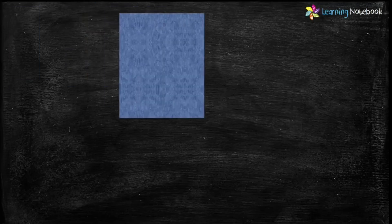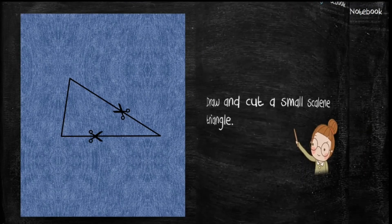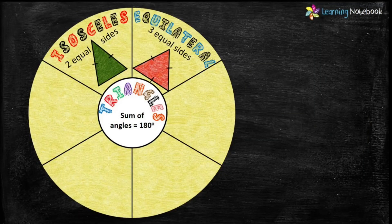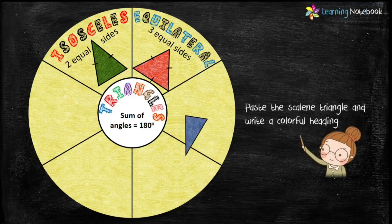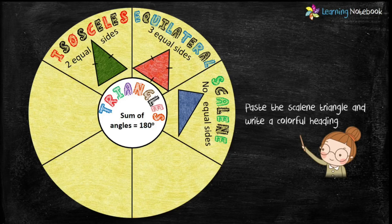Next, take another A4 sheet and draw and cut a small scalene triangle. Then paste this scalene triangle and write a colorful heading along with its property — that it has no equal sides. Students, now we have completed types of triangles on the basis of sides, so now let's make triangles on the basis of angles.